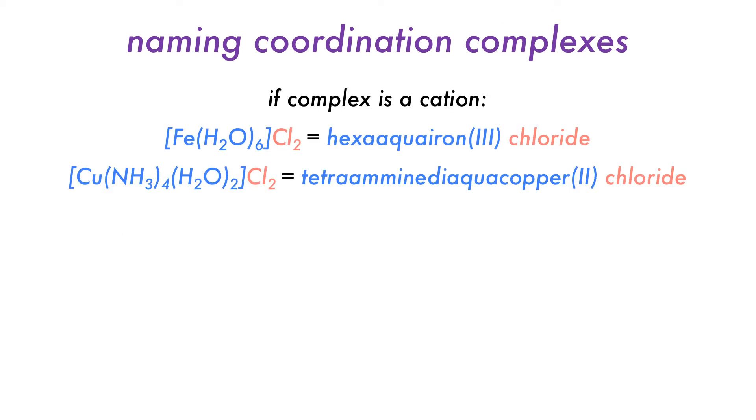If a complex is cationic, we write it first with ligands appearing before the metal, followed by any counter ions to balance the charge.